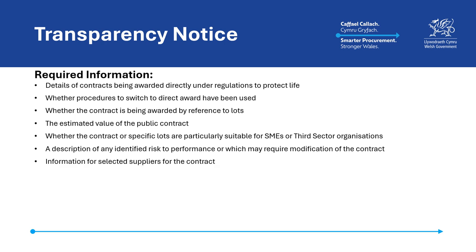Information for selected suppliers for the contract, including the supplier's name; the unique identifier for the supplier; or, in the case of a direct award based on urgency grounds where the supplier does not have a unique identifier, unique information such as a Companies House number; and the supplier's postal and email address. The estimated date when the contract will be entered into.